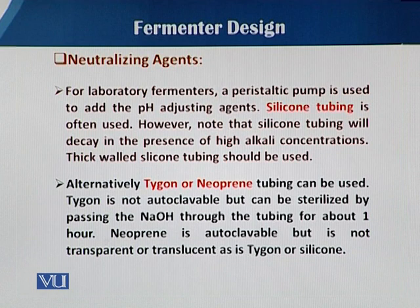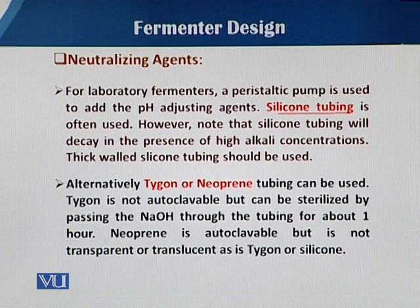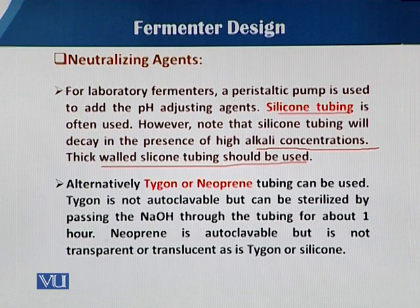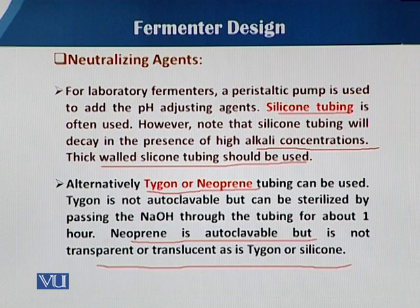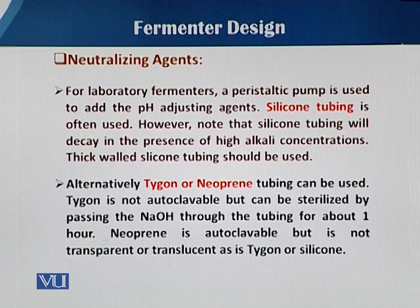For laboratory fermenters, a peristaltic pump is used to add the pH-adjusting agent, linked with different kinds of tubing — mostly silicone tubing. However, silicone tubing degrades in the presence of high alkali concentrations, and when sterilized at high temperatures it has a restricted lifespan. Alternatively, Tigon and Neoprene tubing can be used. Tigon is not autoclavable but can be sterilized by passing sodium hydroxide through it for about one hour. Neoprene is autoclavable but is not transparent, which is why Tigon or silicone tubing is mostly preferred for adding neutralizing agents.